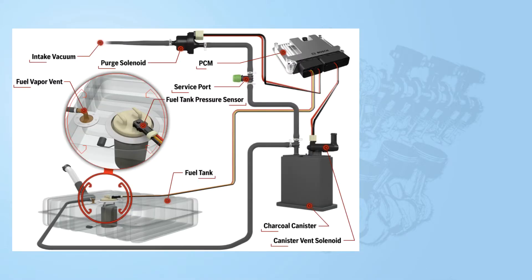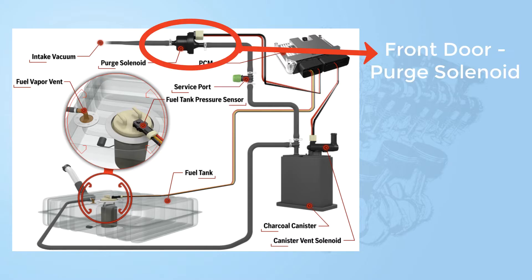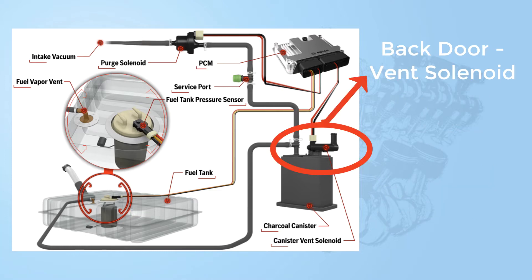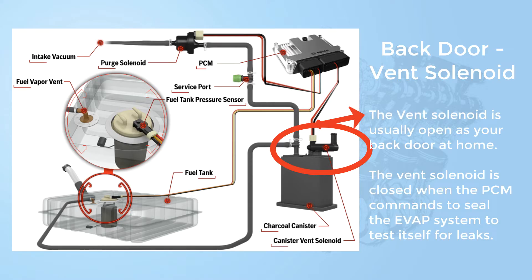One way to remember the EVAP components: your purge solenoid, usually located near the air intake, allows vapors to leave the canister and go into the air intake — we call it the front door. Typically at home you keep your front door locked, so the purge solenoid is always going to be closed. Your back door, which is your vent solenoid, you would keep open — so your vent solenoid is usually in the open position. The time we close the vent solenoid is when we're pressurizing the system to check it for any leaks.